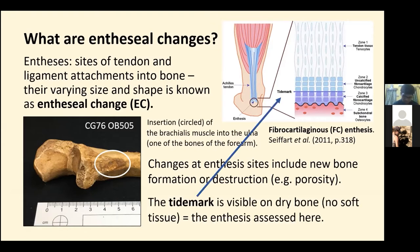The tide mark is the surface of the calcified fibrocartilage where the soft tissue has hardened, and you can see it on dry bone — bone without any soft tissue — and so the tide mark is what I was looking at in this project when I was assessing the enthesial changes.